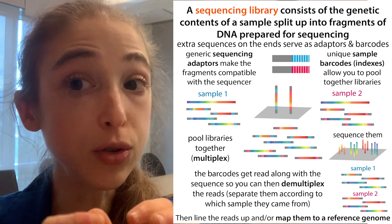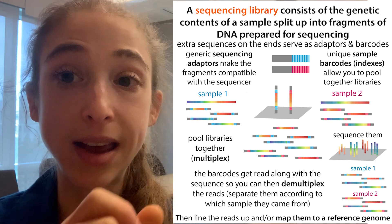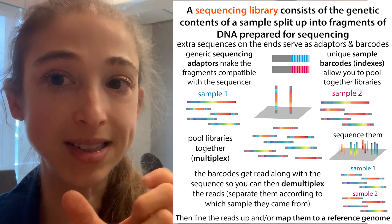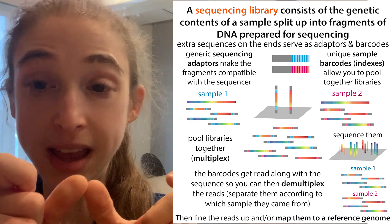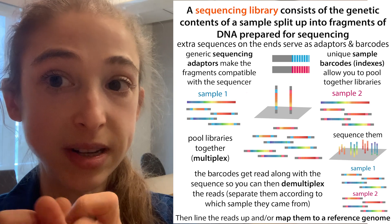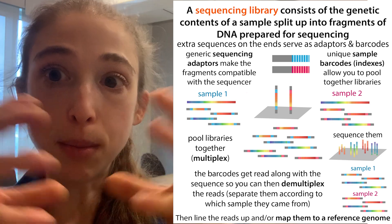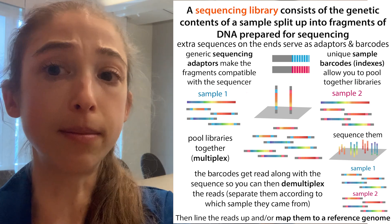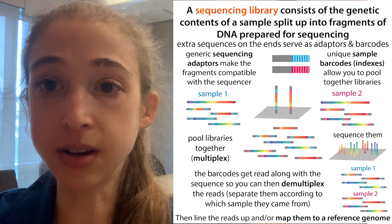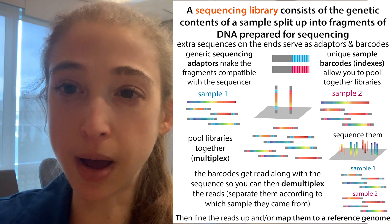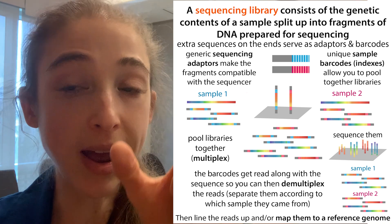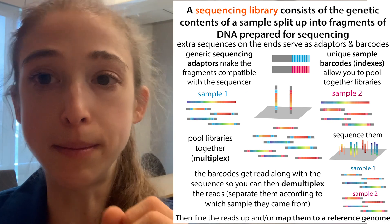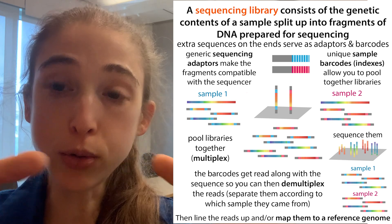Typically when you add these adapters, you also add on a barcode. This barcode is really helpful because it's going to allow you to identify which sample one of those pieces came from. So what you can do is pool samples together — you take samples from one cell population, another cell population, and another — and then add these adapters onto the end as well as those unique barcodes, and then pool them together.